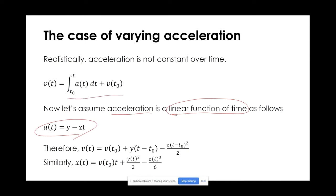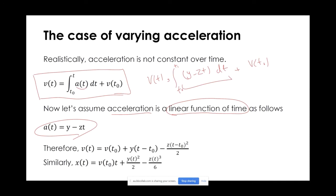We had this equation of motion from before, where speed is equal to the integration of the acceleration plus the initial speed of the vehicle. If I rewrite this from t0 to t1, and instead of a constant acceleration, I put this y minus zt dt plus the initial speed of the vehicle. If I take this integration with this specific acceleration function, I can get an equation that relates speed to this acceleration function. If you just take the integration of this one, this is what you get — it's an easy integration to take.